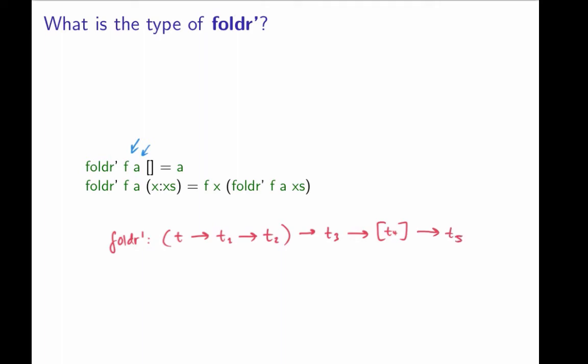But what is t5 first? Let's see. We can see from the first clause that the result type of foldr is the type of a. So that's type of t1. So this is really t1. That's the first thing we notice.